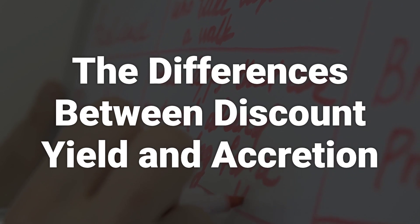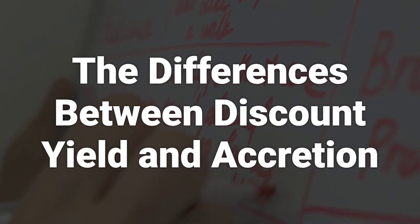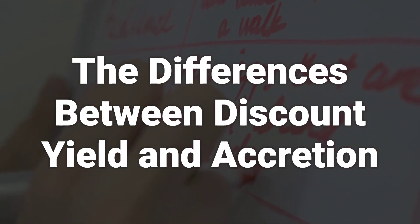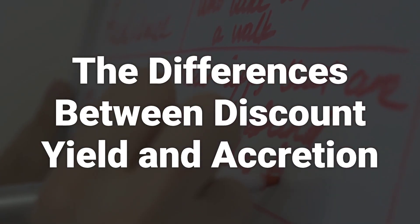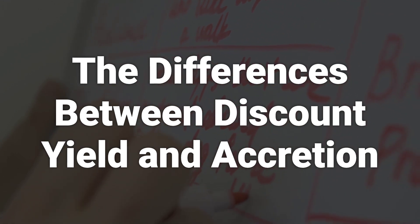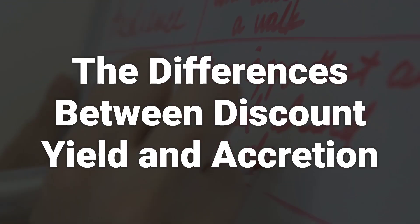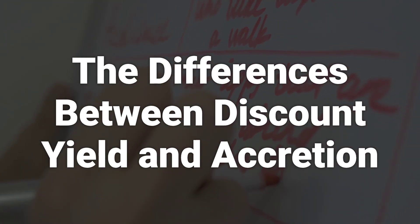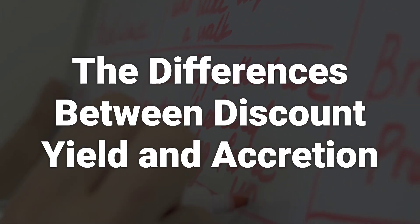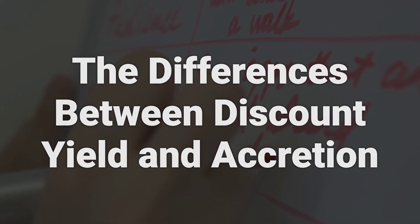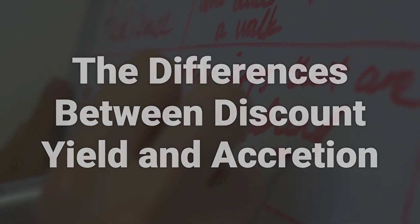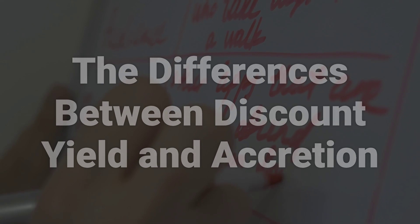Securities that are sold at a discount use the discount yield to calculate the investor's rate of return, which is different than bond accretion. Bonds that use bond accretion can be issued at par value, at a discount, or at a premium, and accretion is used to move the discount amount into bond income over the remaining life of the bond.